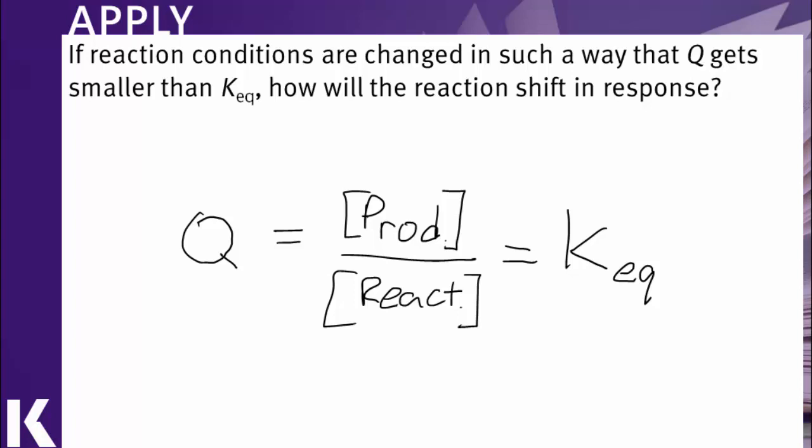If we were to somehow disturb our reaction so that Q were less than K_eq, this would mean we decrease the value for Q. The only way we could do this would be to increase the concentration of reactants or decrease the concentration of products.